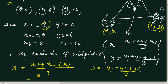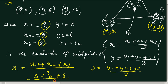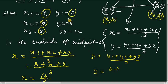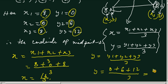So x equals 0 plus 0 plus 8 plus 8 divided by 3, which gives 16 by 3. This is a fraction. Then y equals y1 plus y2 plus y3: y1 is 0, y2 is 6, y3 is 12, divided by 3.